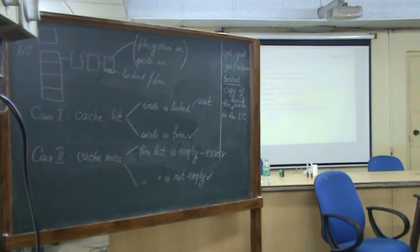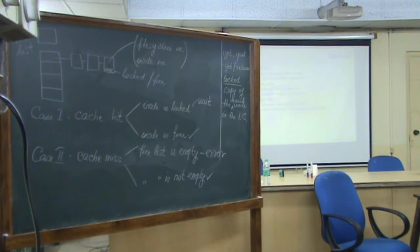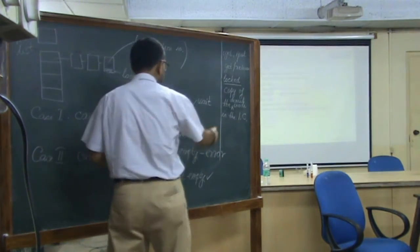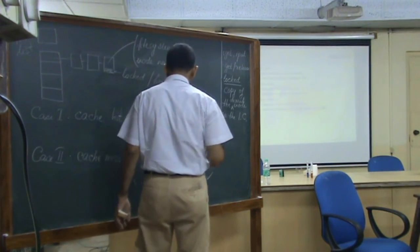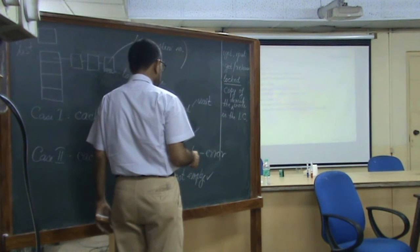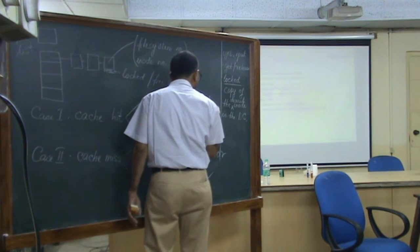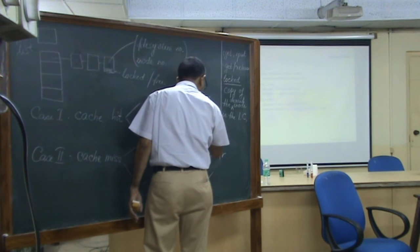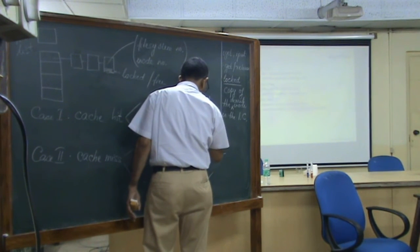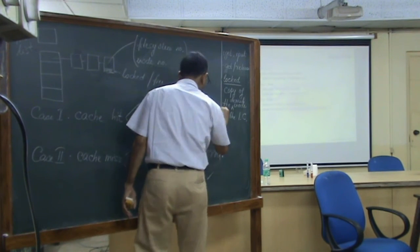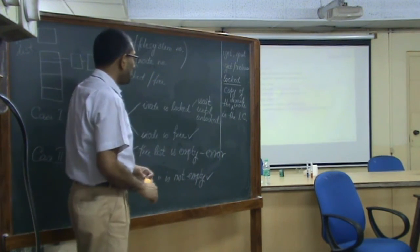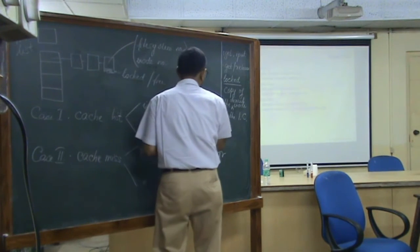To complete this discussion: in the cache hit locked case, you wait — specifically you sleep until the inode is unlocked. The kernel itself will unlock the inode, and when unlocking it will also know which other processes are waiting for it to become unlocked.